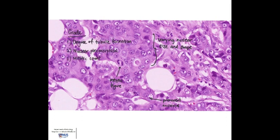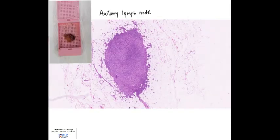In summary, grading of ductal carcinoma is determined by the degree of tubule formation, nuclear pleomorphism, and mitotic count. Here is a microscopic image of an axillary lymph node and a corresponding gross section.